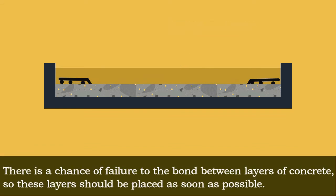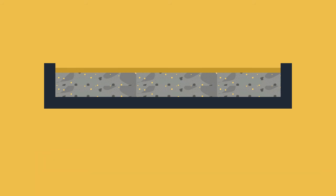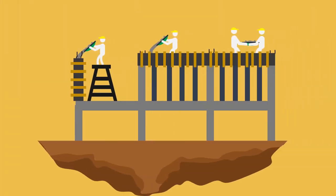The surface of the underlying layer should be kept rough and laitance formation must be removed. There is a chance of failure to the bond between layers of concrete, so these layers should be placed as soon as possible. By this way, you can place the concrete in columns, beams, and roofs or floors.